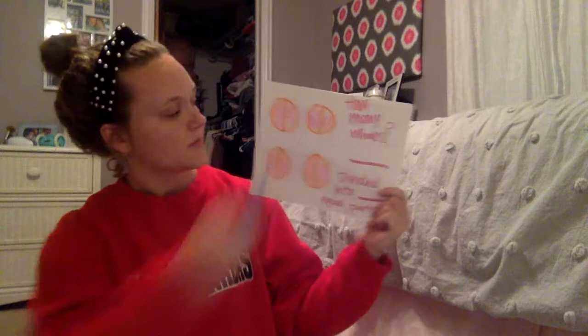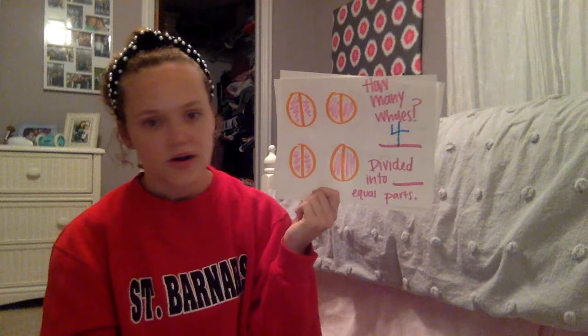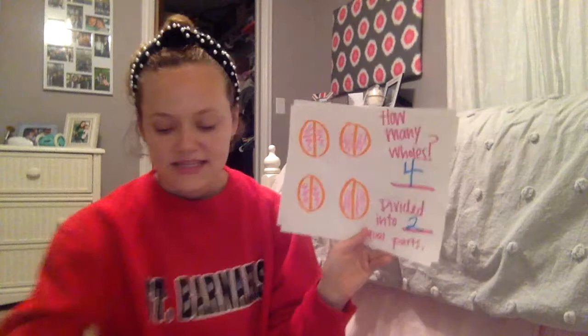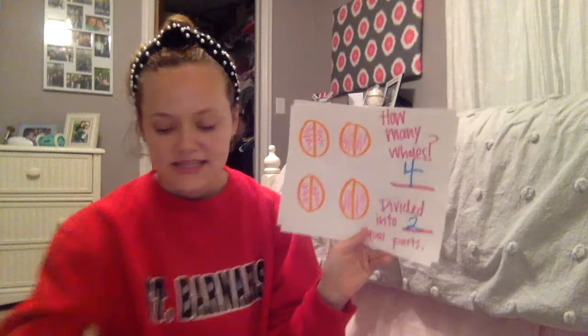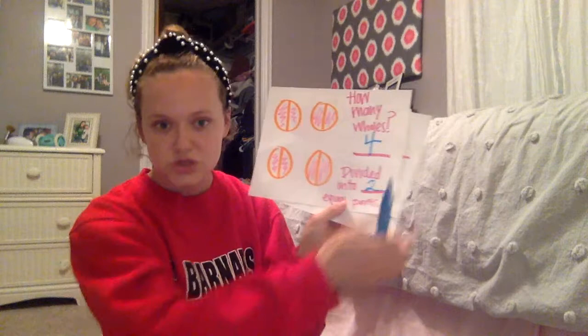Let's try another one. This one's a little different. First, we need to decide how many whole shapes we have: one, two, three — I have four whole shapes. They're divided into how many equal parts? Just look at one shape: one, two. They're all divided into two equal parts. So my denominator needs to be the same for all of these — how many they're splitting each shape into. We said they split each shape into two parts, so that's my denominator.